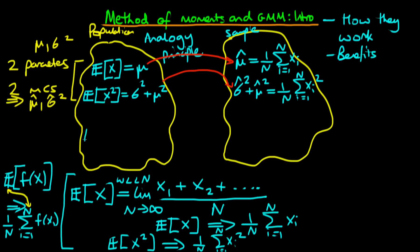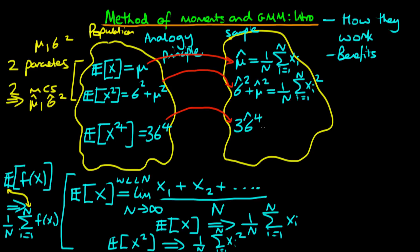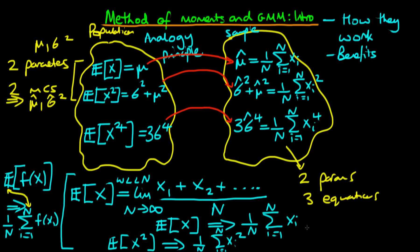But what happens if we have another population moment condition? Here we have a third condition: the expectation of x to the power of 4 equals 3 sigma to the power of 4. Via the analogy principle, we replace the expectations operator by 1 over n times the sum, giving us: 3 sigma hat to the power of 4 equals 1 over n times the sum from i equals 1 to n of xi to the power of 4. Notice that we still only have two parameters but now three equations to satisfy. From basic algebra, if we have more equations than degrees of freedom, there is no way to exactly satisfy them all — and this is the case in GMM.